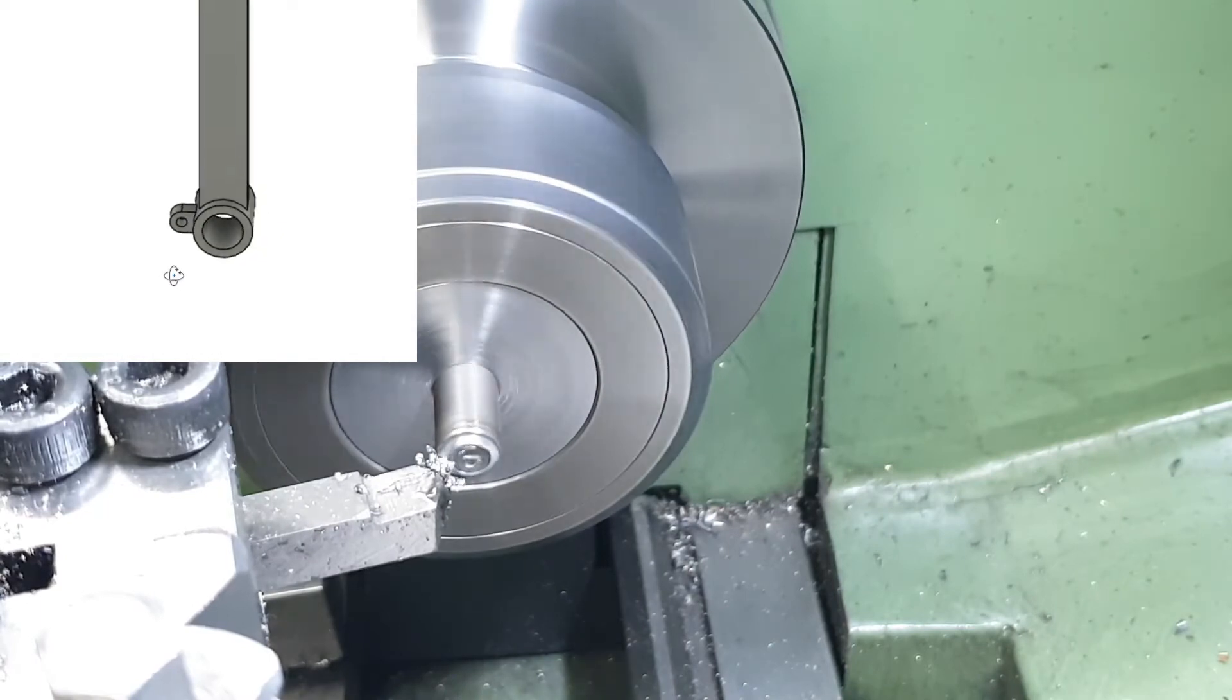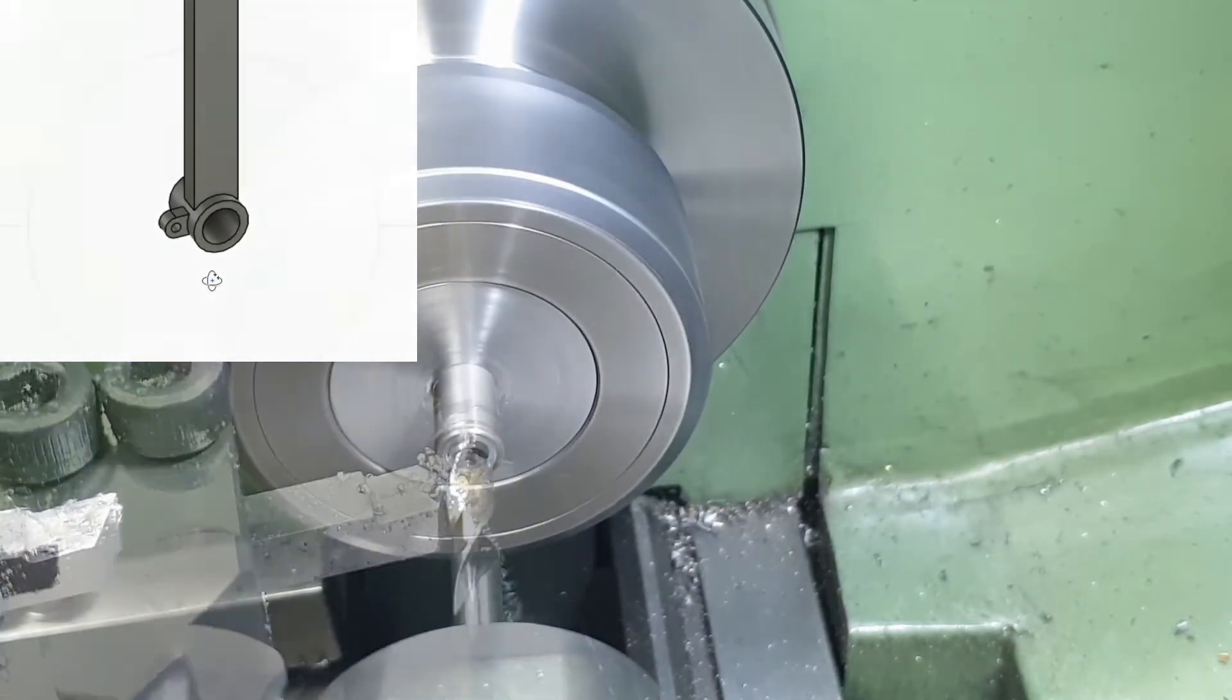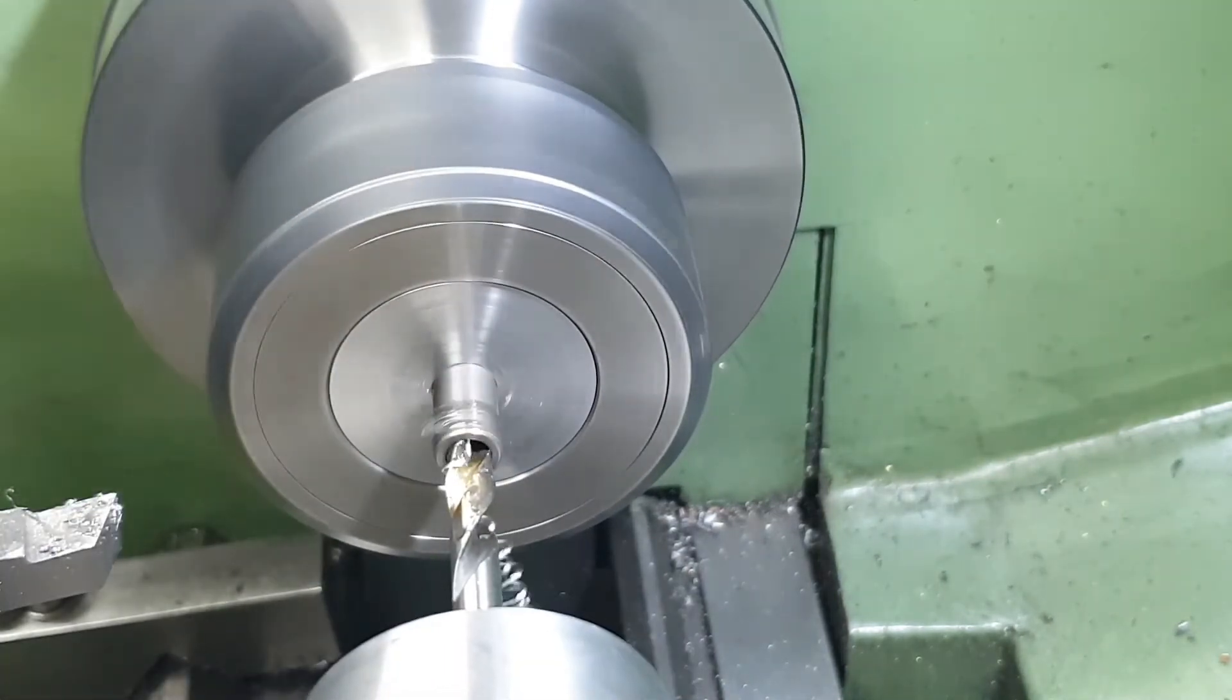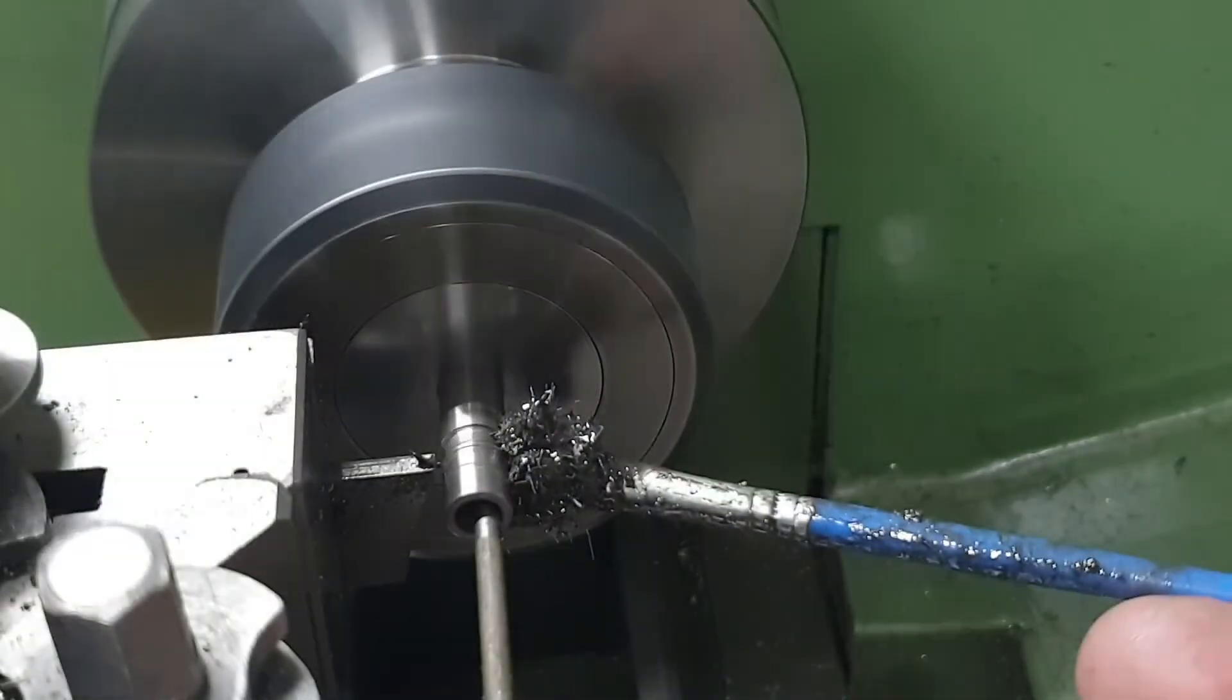For the pivot at the bottom of the lever, I faced off some 8mm round bar and drilled it through at 5.5mm, before parting it off and finishing it to length.